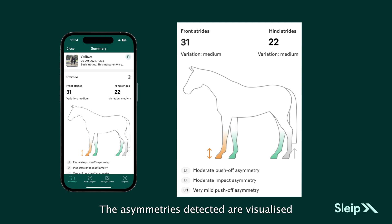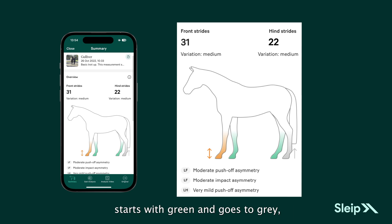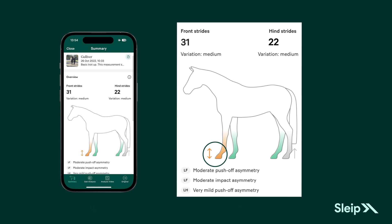The asymmetries detected are visualized by different colors in the horse's legs. The scale of how severe the asymmetry is starts with green and goes to gray, yellow, orange, and red. As you can see, the moderate push-off and impact components are colored orange in the front limb.